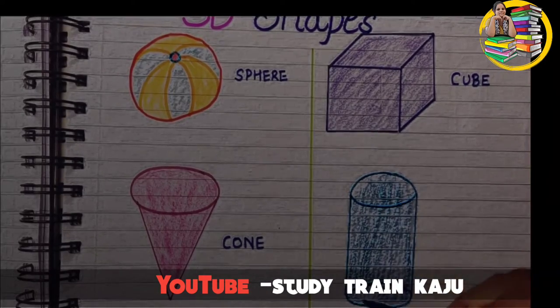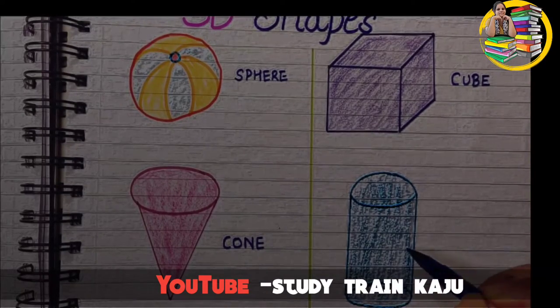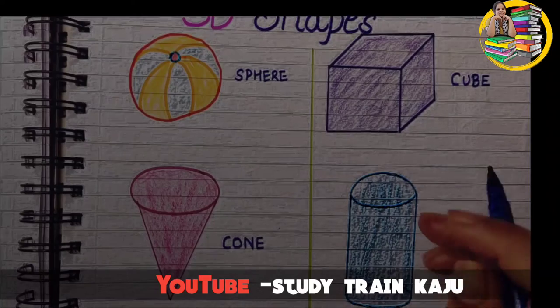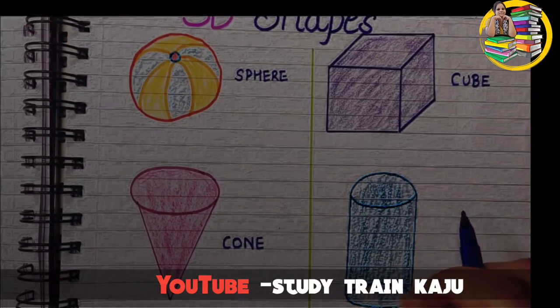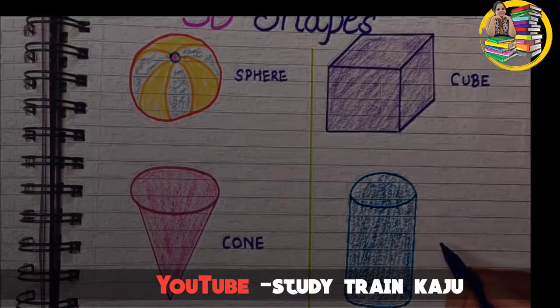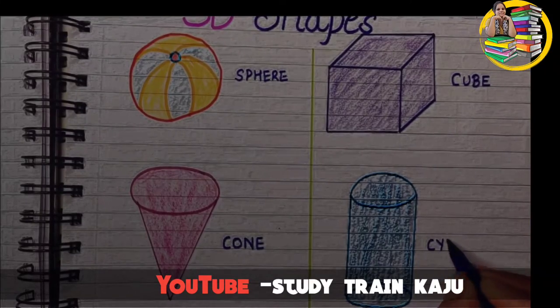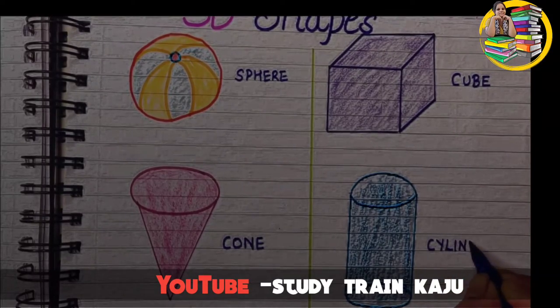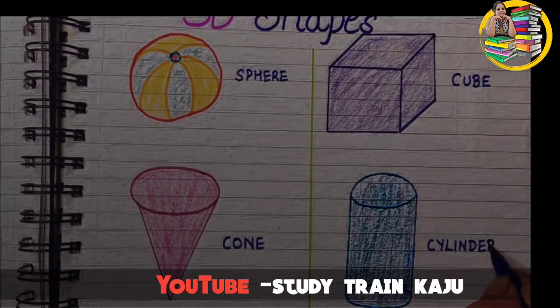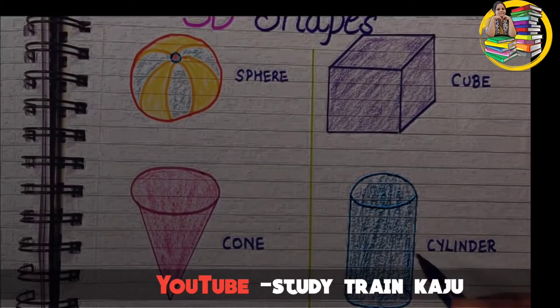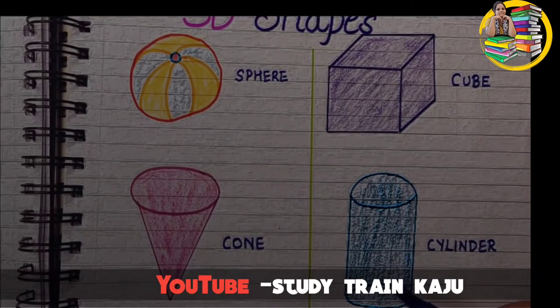The next shape is cylinder shape. This looks like an elongated cylinder. C-Y-L-I-N-D-E-R. Cylinder.